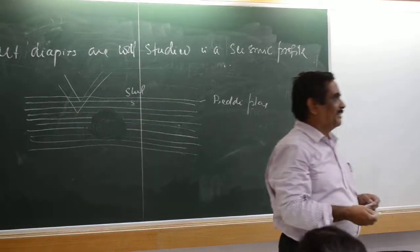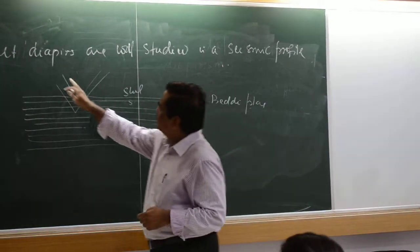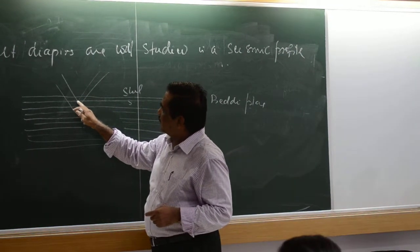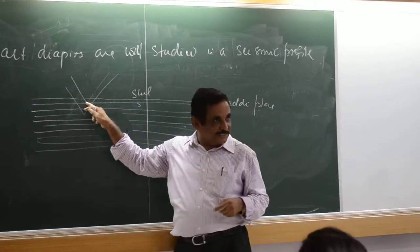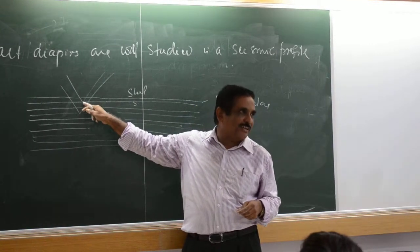Otherwise, how will you get these images? Because this seismic wave comes, goes into the strata, and comes back getting reflected from this surface because it has a density contrast.